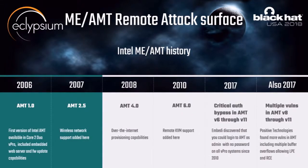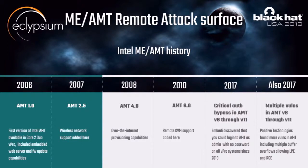A brief history of AMT: first encountered in 2006, wireless support added in 2007, provisioning over the network in 2008, remote KVM in 2010, and the first major vulnerability in 2017. That vulnerability was an authentication bypass where you could send an empty digest to AMT and it would let you authenticate. In 2018, Intel released advisories for a few more vulnerabilities they patched internally — kudos to Intel for publicly disclosing things they found internally.